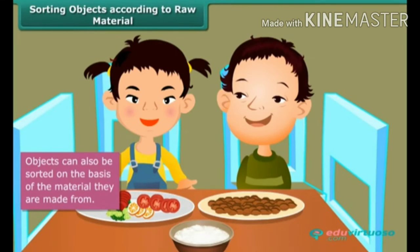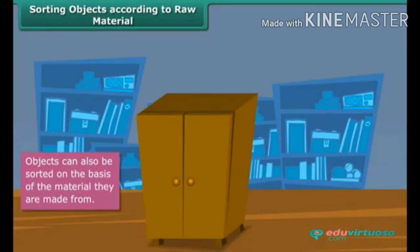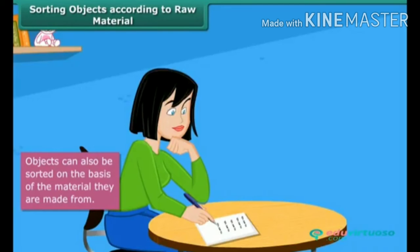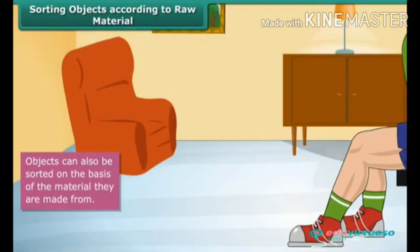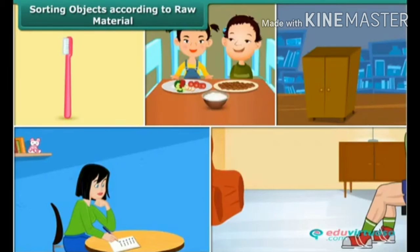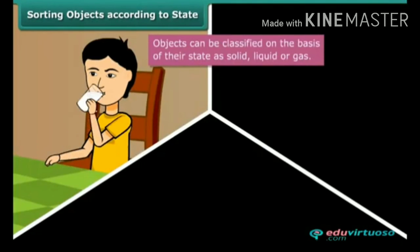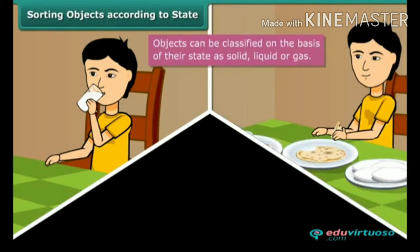The water you drink to quench your thirst is liquid. The food you eat is solid. The chilled juice you relish in summer is liquid, whereas the glass container you use is solid. The warm milk you have is liquid, but the vapor coming out of the milk is gas. Thus, it is clear that things we see around us or use in our day-to-day life can be classified into any one of three categories: solid, liquid, or gas.